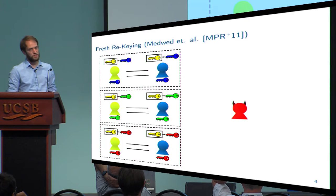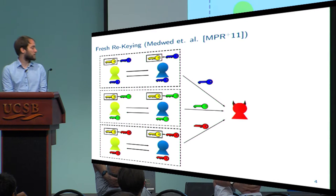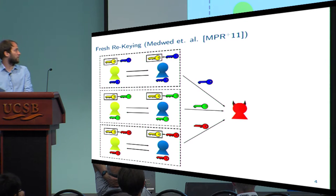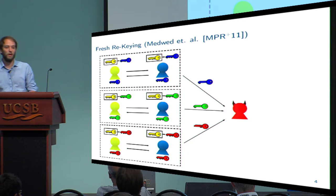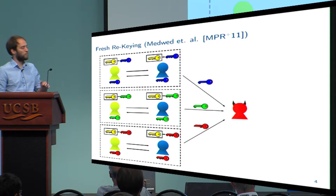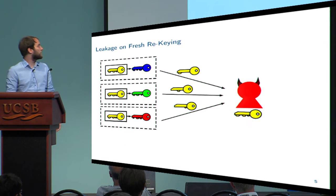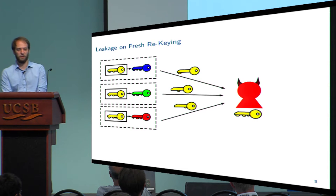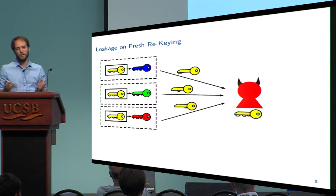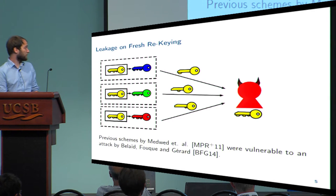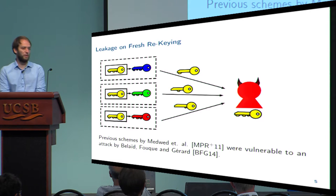In such a setting, if the adversary just targets the protocol, it would only learn some partial information about the session keys. This is not so harmful because when the session keys are computationally independent, an adversary cannot take advantage for future sessions, even if it learned lots of information. But of course, this is not sufficient for security because a clever adversary would simply target the rekeying scheme itself, so we need some kind of a leakage-resilient rekeying scheme.